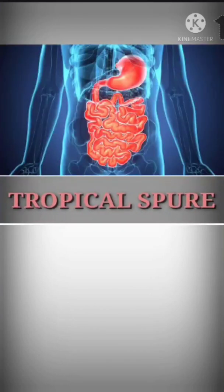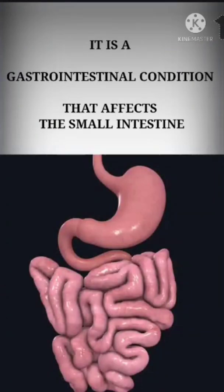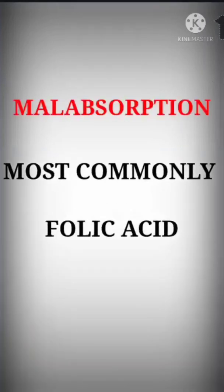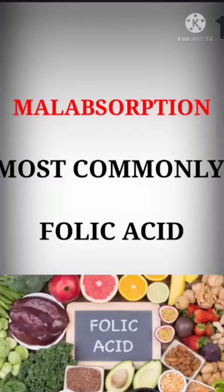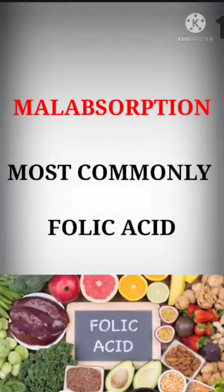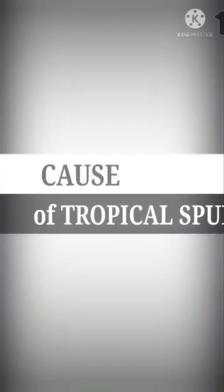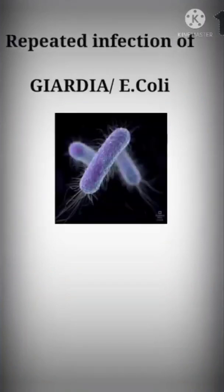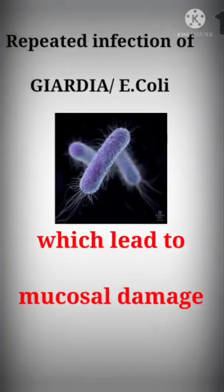Let's talk about tropical sprue. It is a gastrointestinal condition that affects mainly the small intestine, leading to malabsorption, most commonly of folic acid. The cause of tropical sprue is due to repeated infection of Giardia and E. coli,